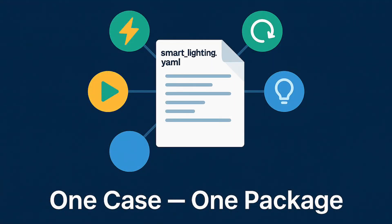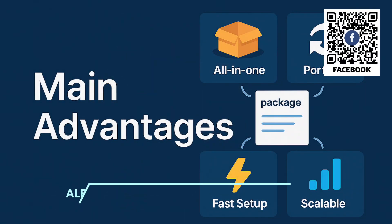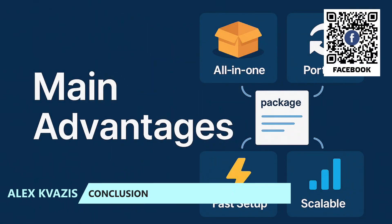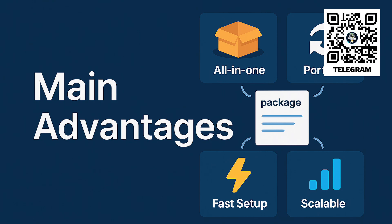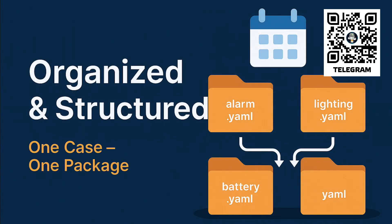Then comes the logic: one script and several automations. For another thermostatic valve, it is enough to create a new file, copy and paste this code into it, and make a few auto-replacements — object names, prefixes, and titles. As I said, this takes about a minute — a result absolutely unattainable when using the interface. Everything needed to implement this case, one of the logical blocks that make up the smart home, is gathered in one file. Main advantages: all functionality in one place, easy transfer, faster configuration and debugging, easy scaling. And most importantly — order. Even a year later, you will be able to quickly find how a function works, because it will have its own separate package.